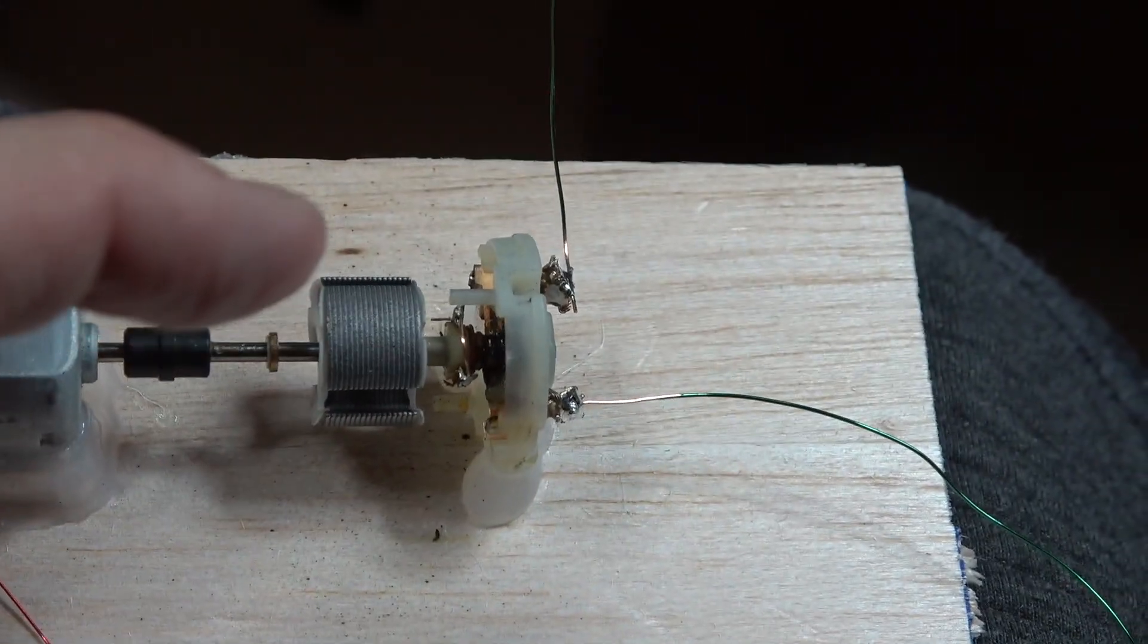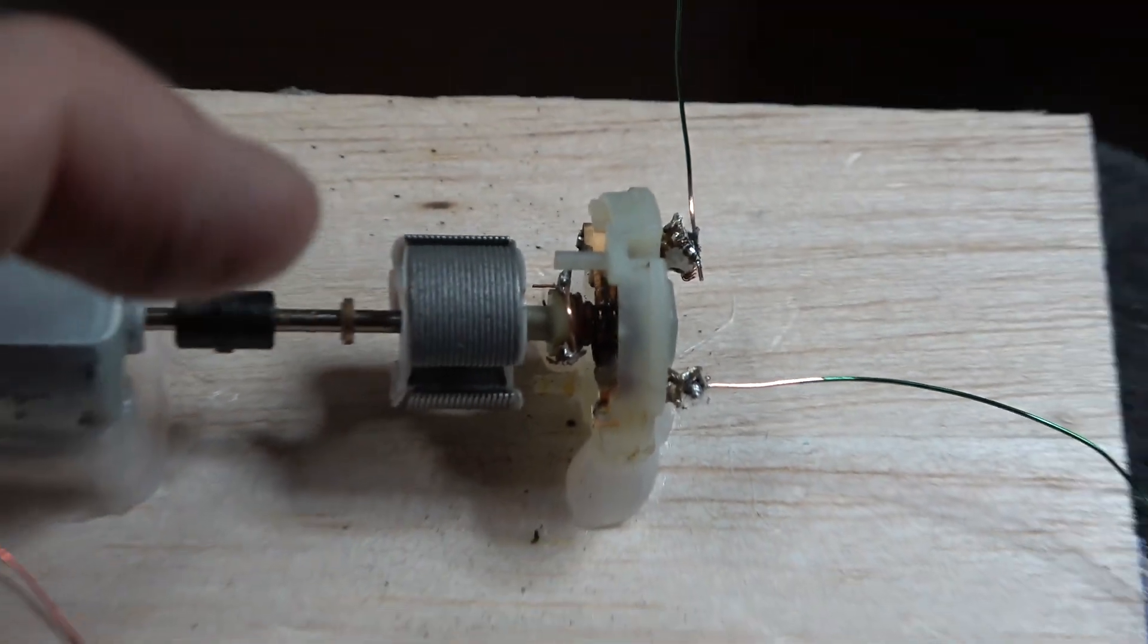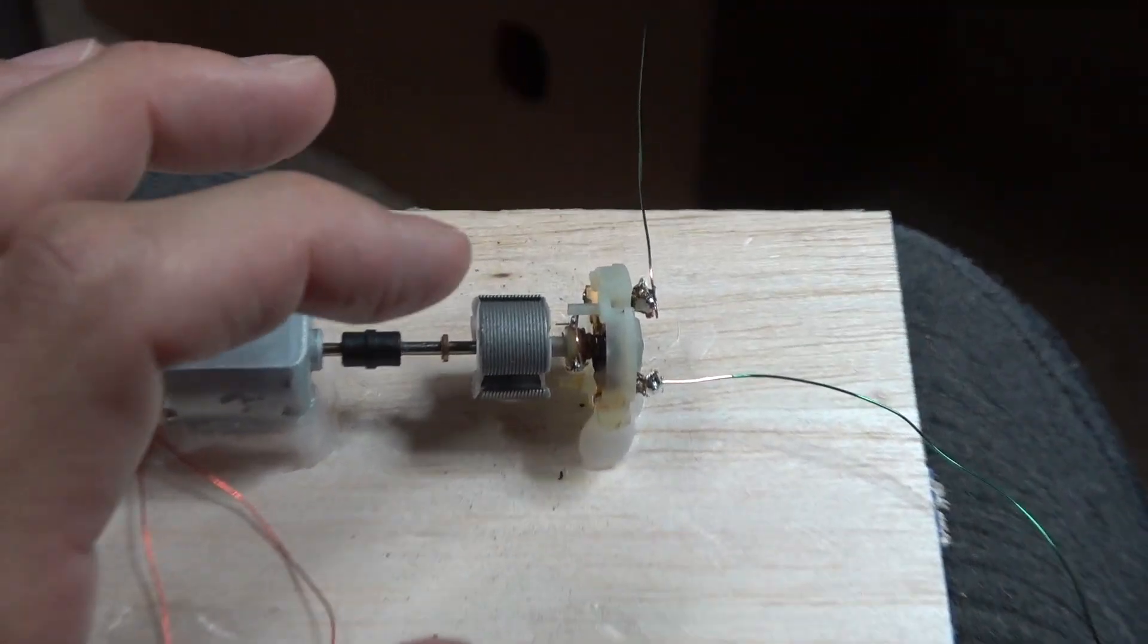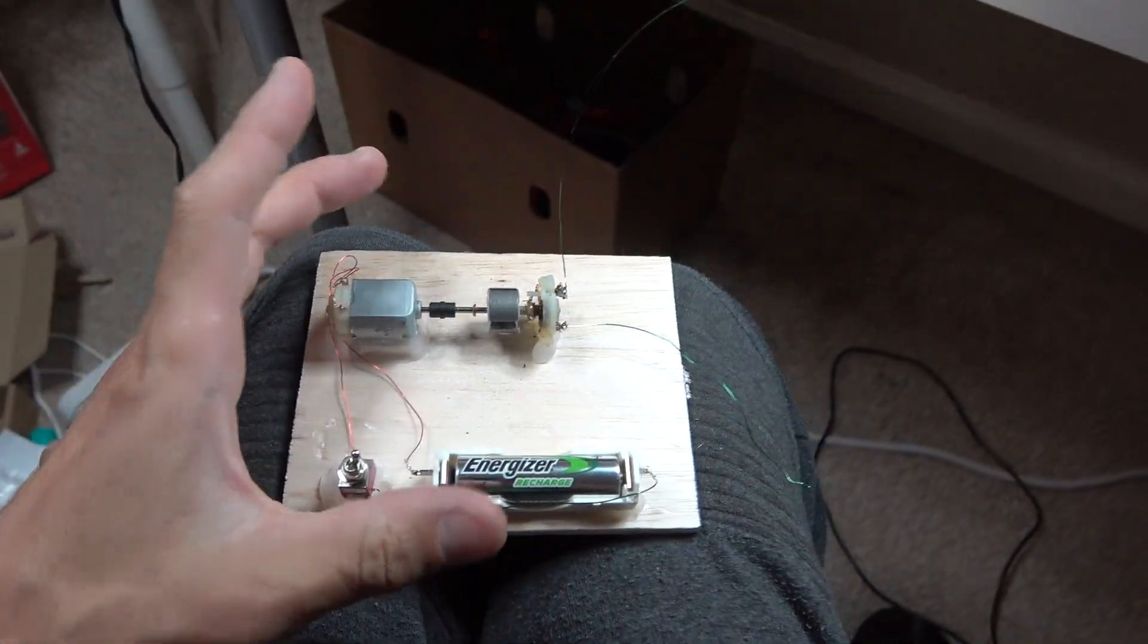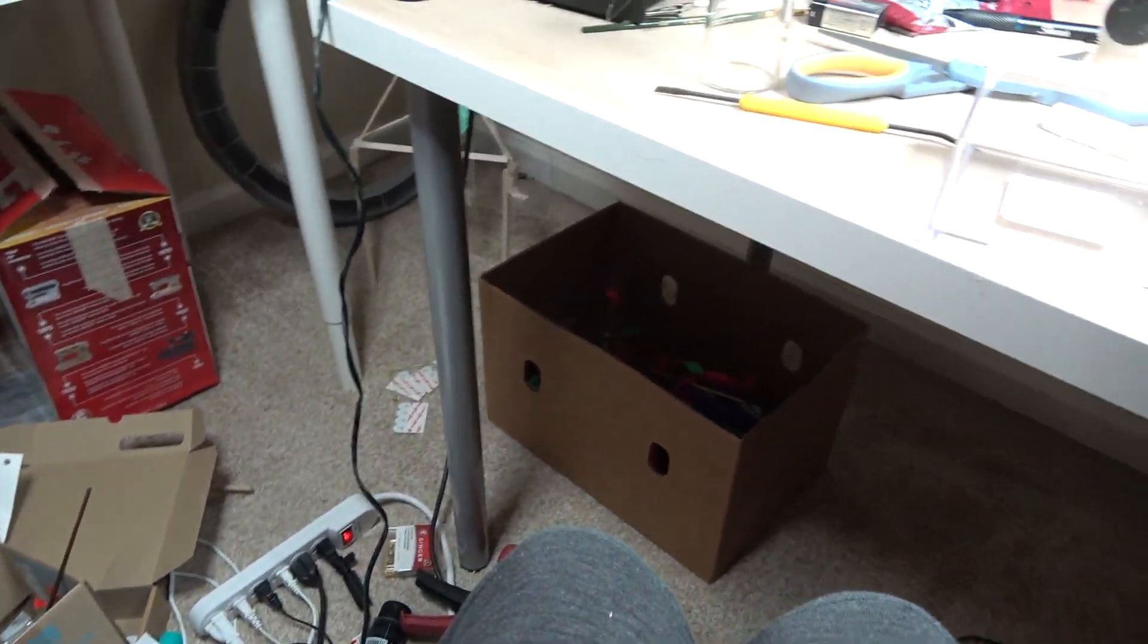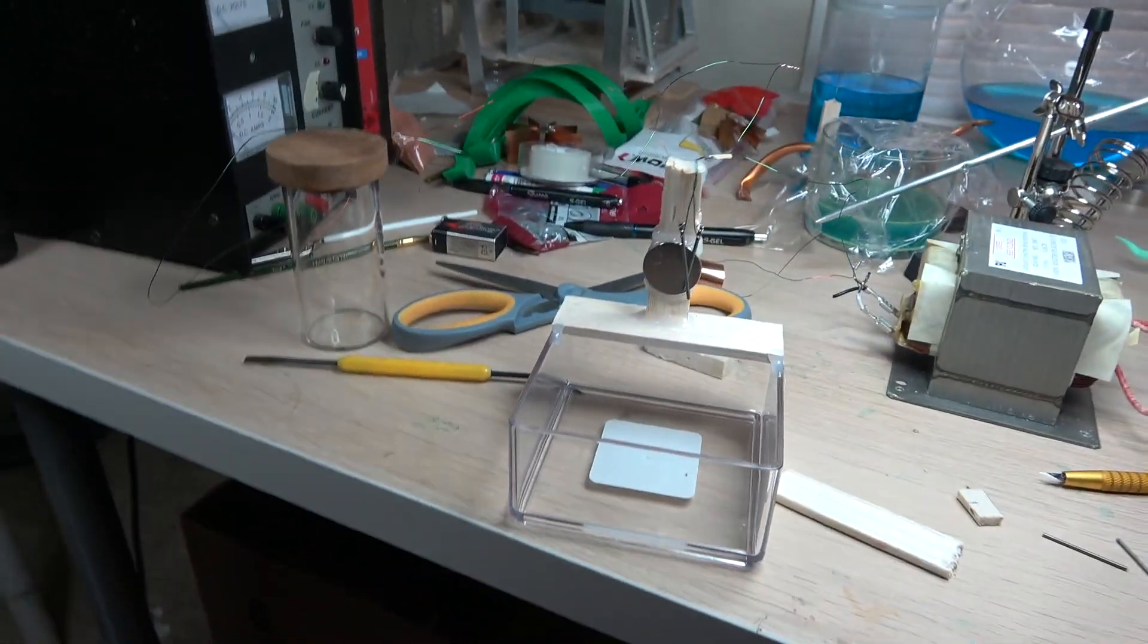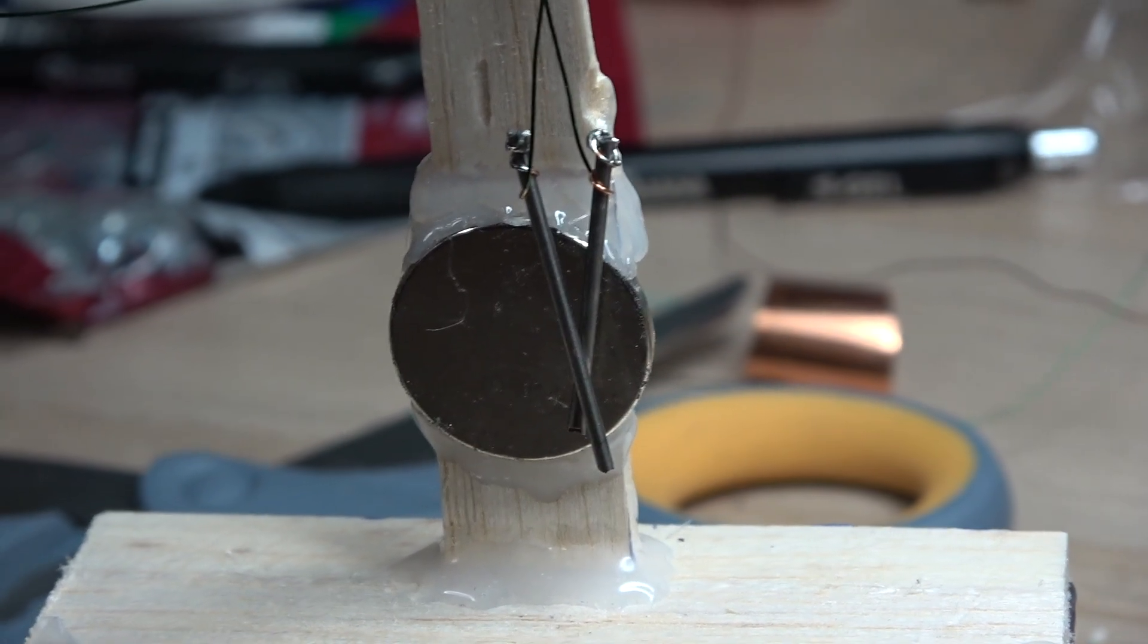But the thing is that it only works with low voltage. Once I got up to higher voltage it started arcing to quite a degree, started smoking, and I realized that it's not really practical for high voltage or high amperage pulsing of DC. So I decided to make something else.